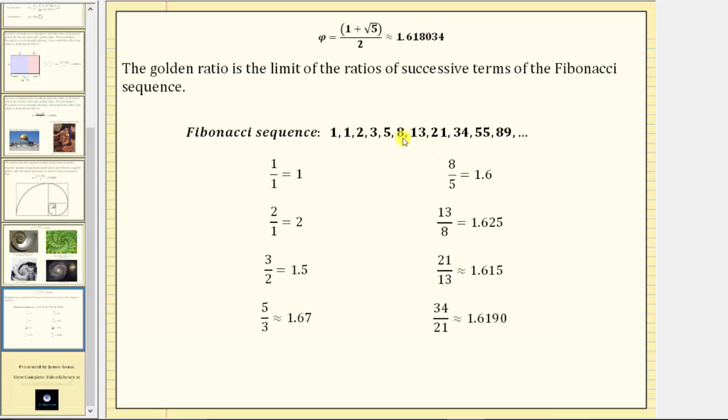Then 13 divided by eight, which is equal to 1.625. And then 21 divided by 13 is approximately 1.615. And then we have 34 divided by 21, which is approximately 1.619. Notice how these values are approaching the value of the golden ratio.